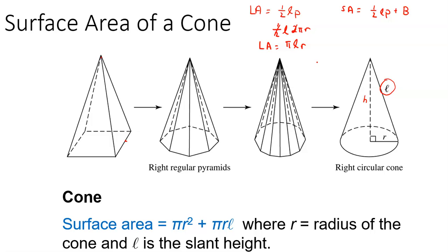I introduce this because you'll see pi R L in the book. The same idea applies to surface area: one-half slant height times perimeter is the lateral area, and the area of the base — a circle — is pi R squared. The formula pi R L plus pi R squared is perfectly valid; it's just that memorizing one formula for every different object requires too much brain space.